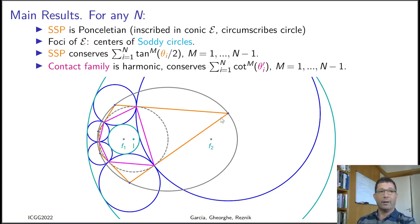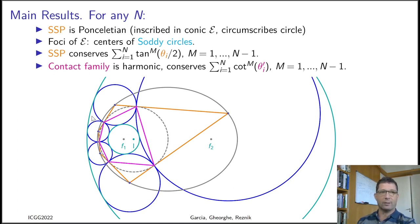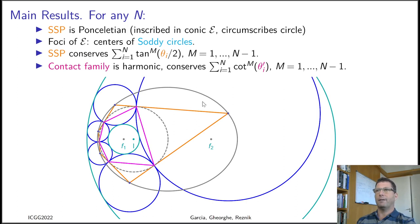A very interesting observation is that the foci of the outer Poncelet conic — here's one focus, here's a second focus — are precisely the centers of the inner Soddy and outer Soddy circles of the chain. So F₁ is the center of the inner Soddy circle and F₂ is the center of the outer Soddy circle, which is only partially viewable here.